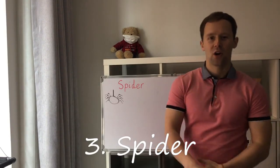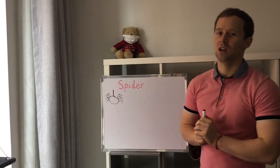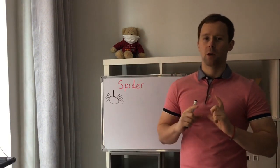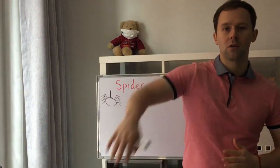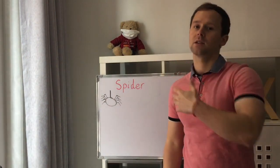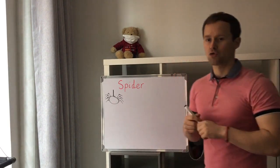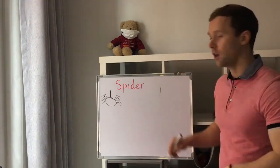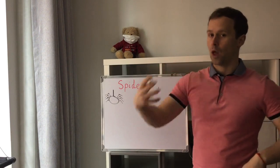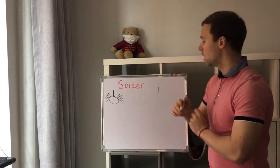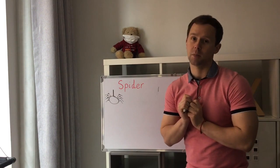Our third variation is Spider. For this, students will need a piece of paper or their textbook and also a pen or pencil. They're going to mingle around the classroom, ask their English question, and again play paper, scissors, stone. If you're the winner, you can draw one part of the spider. If you're the loser, you're going to have to wait until you win one round of paper, scissors, stone. You'll keep playing until one student completes their spider.